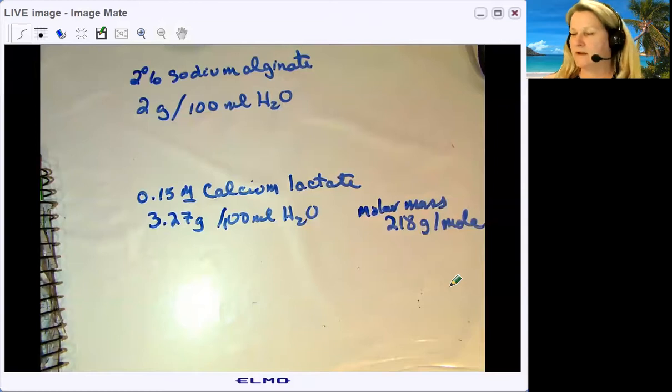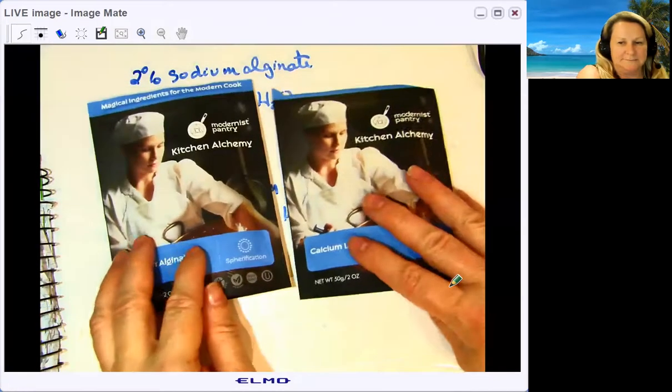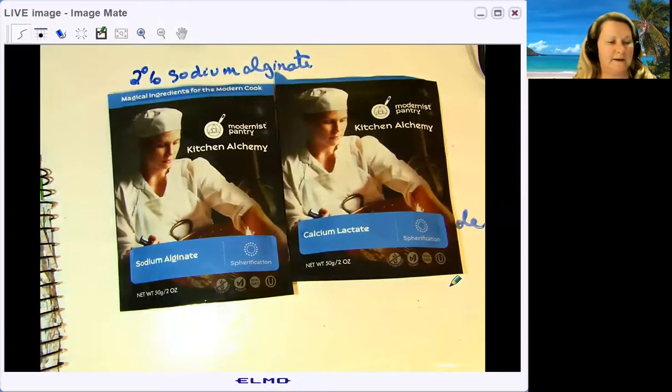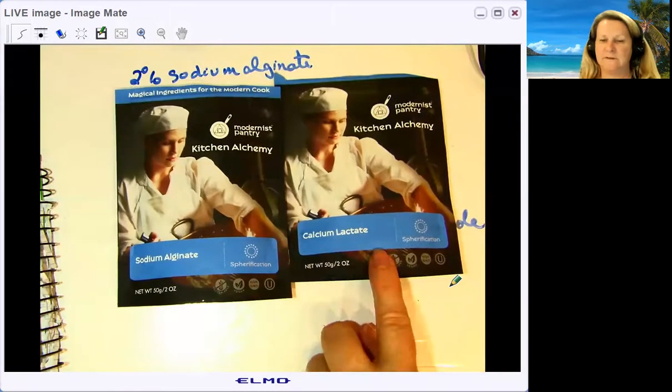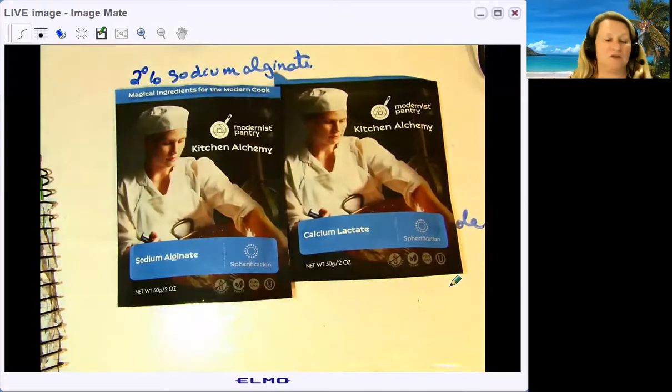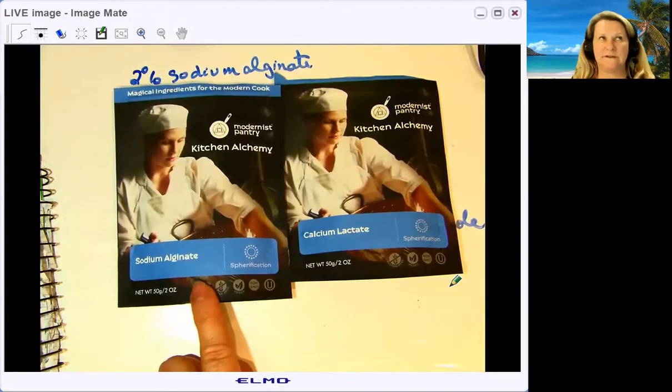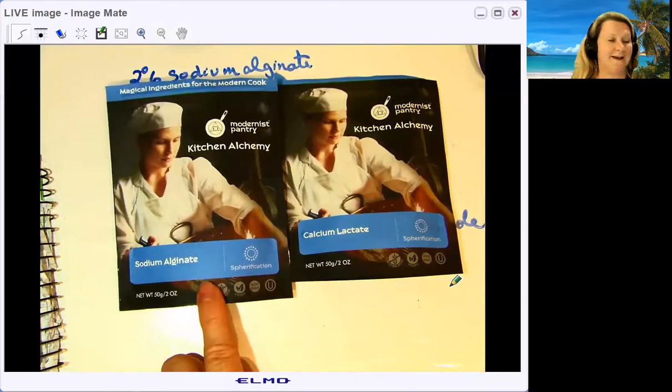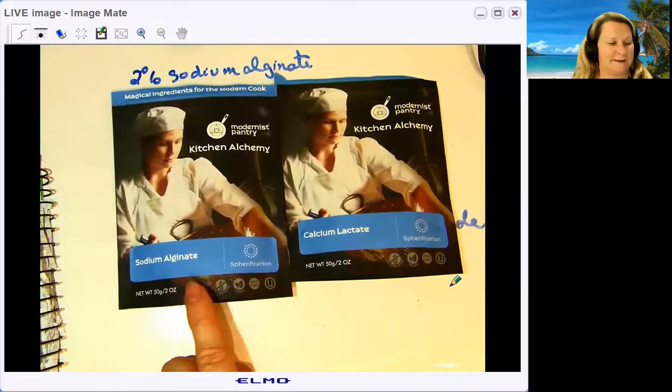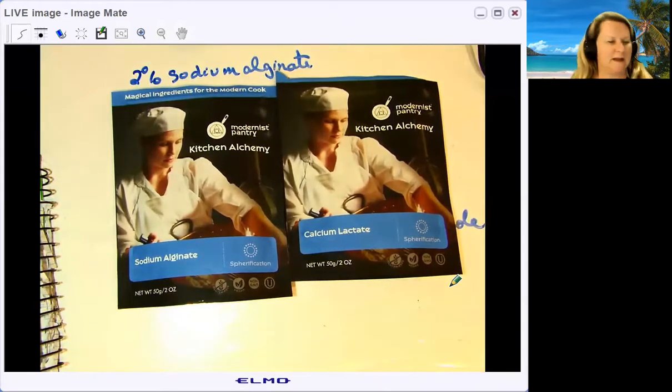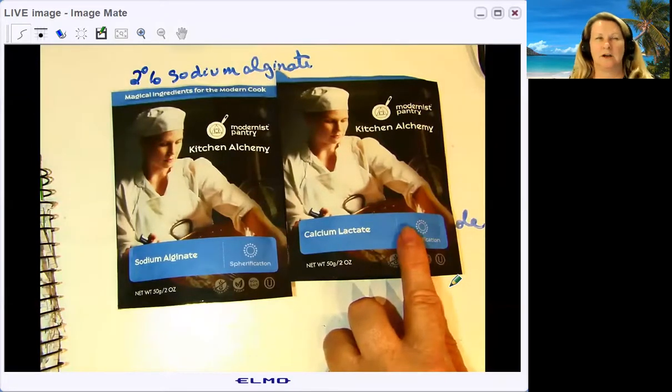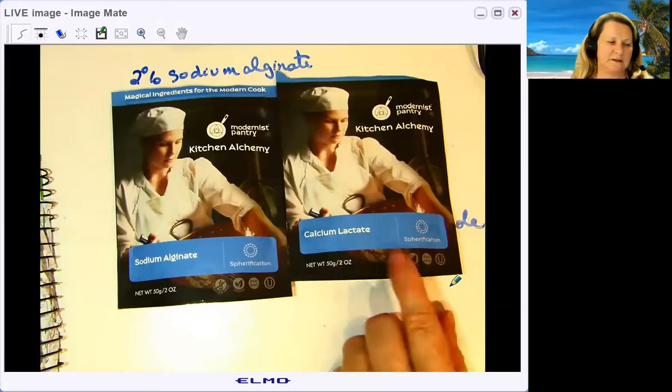Let me show you where I get the sodium alginate and calcium lactate from. I'll put the links in the YouTube video comment section. For about $17, you can buy a two pack with 50 grams of sodium alginate and 50 grams of calcium lactate. Since you're only making a 2% sodium alginate solution, that 50 grams will make over two liters, which will last a really long time. The calcium lactate, with molar mass 218 grams per mole, requires a more concentrated solution. 50 grams will probably make around 300-400 mL of solution, but that's still enough for multiple classes.